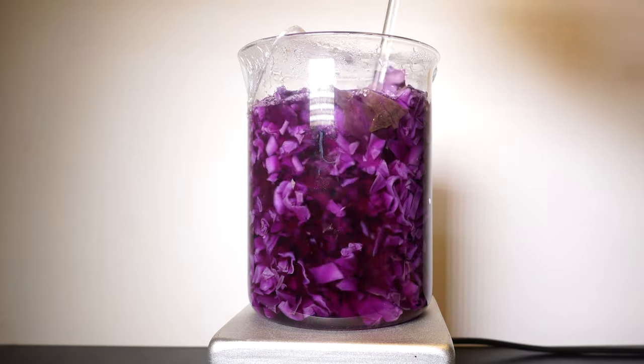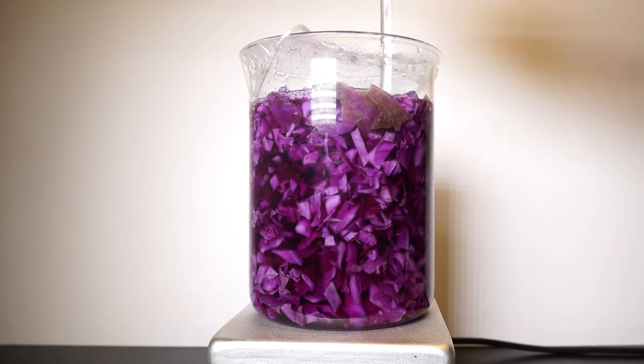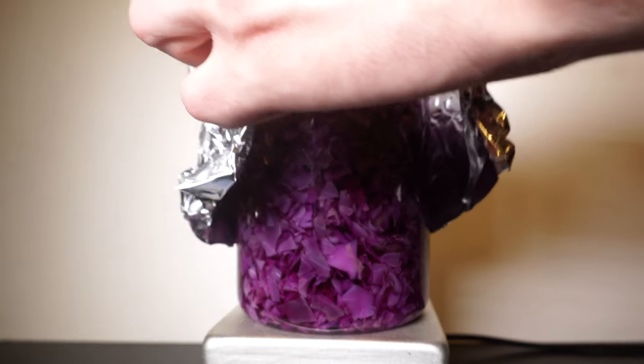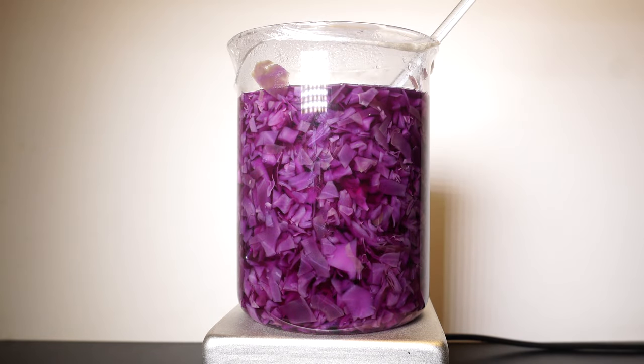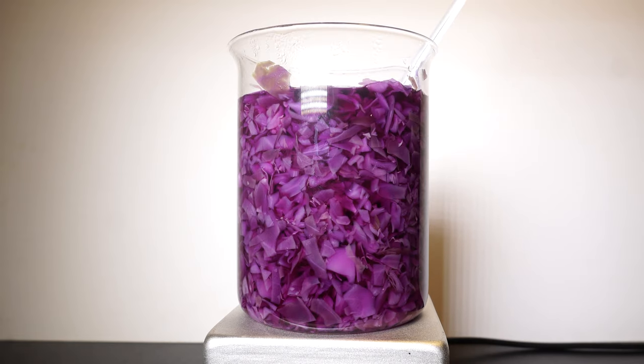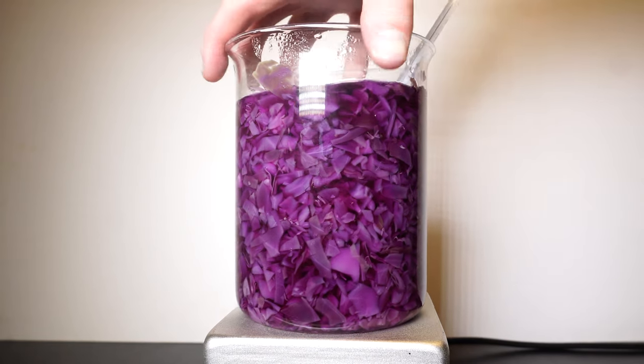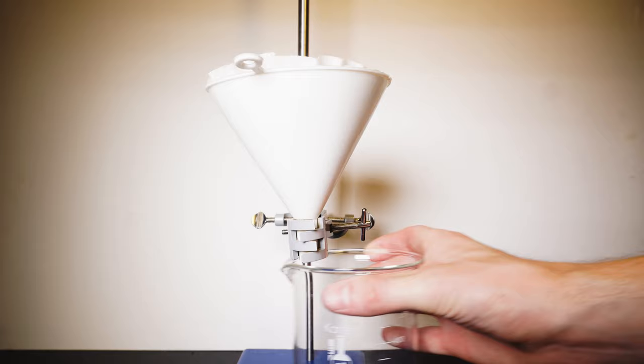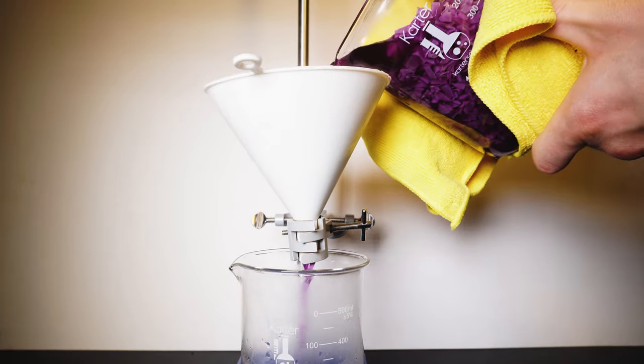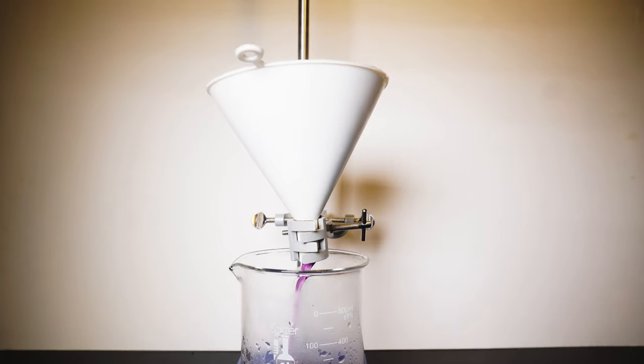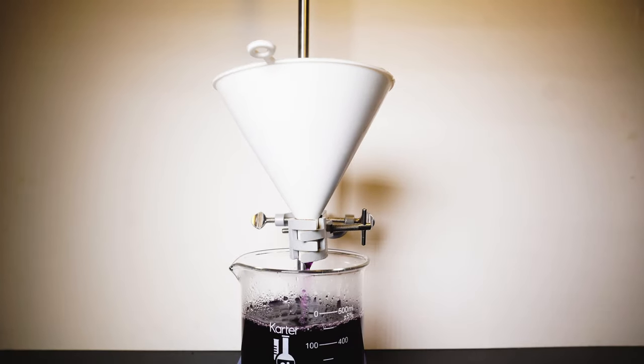We can see a nice beautiful purple anthocyanins are being brought into the solution. Finally after 30 minutes I turn off the heat, take off the foil, and now it's time to strain off all of the cabbage from the solution. To do this I just set up a hot gravity filtration with a filter and a coffee funnel. Since my cabbage was all moderately sized it sank to the bottom and I was able to decant off most of the liquid without any issues.